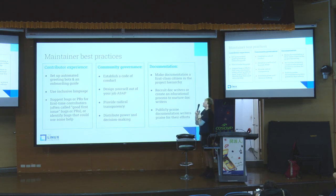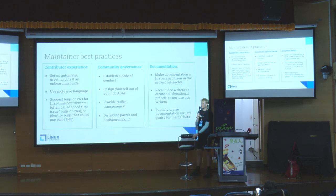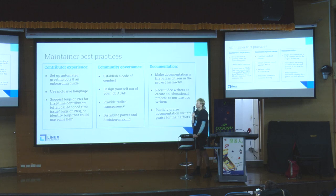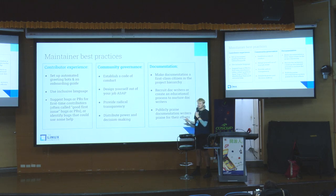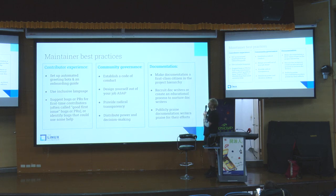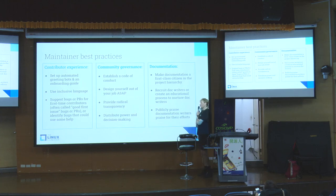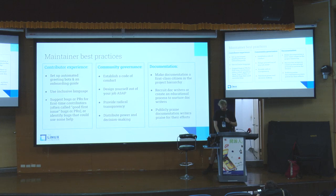The second category of best practices is community governance and management. Many interviewees talked about establishing a code of conduct. Another recommendation is designing yourself out of your job as soon as possible — corresponding to the bus factor problem — so your project can continue without you. Third is providing radical transparency, and fourth is distributing power and decision making, whether through modular decision making, working groups, or something else. The third category is documentation — making good documentation a priority. Some maintainers mentioned hiring people focused on documentation writing, and publicly praising documentation writers for their efforts.